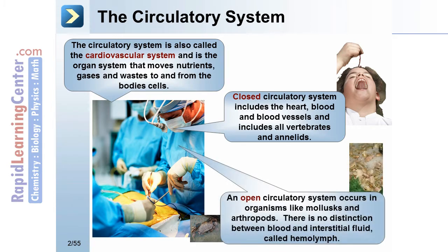An open circulatory system occurs in organisms like mollusks and arthropods. There is no distinction between blood and interstitial fluid, which is called hemolymph.